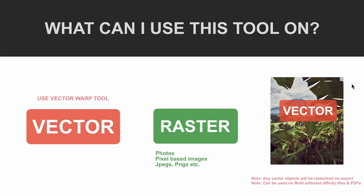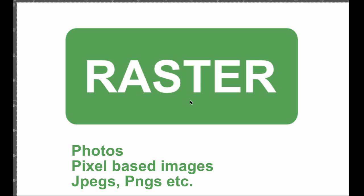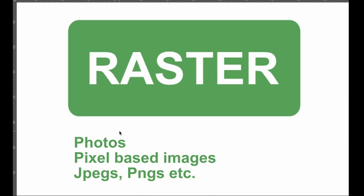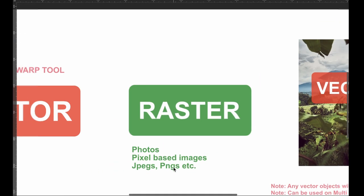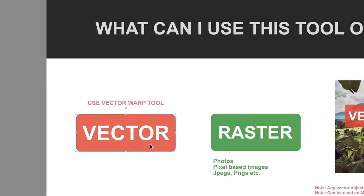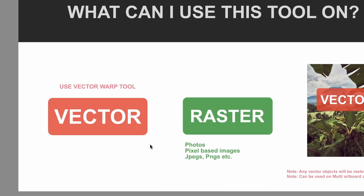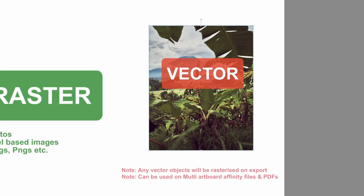Before moving to mock-ups, let me clarify what you can use this tool on. It's best used on raster images — that's why it's here in Affinity Designer, which is mainly a vector-based program; it's borrowed from Affinity Photo. Use it on photos, JPEGs, PNGs, anything pixel-based. Don't use it for vectors — there is a vector warp tool for that, and if you apply this live filter to vectors they will export as a rasterized, pixelated image. One cool thing is you can use it on PDFs and multi-artboard Affinity files.